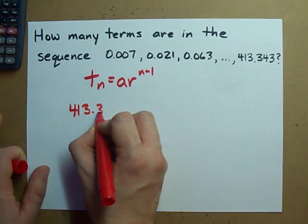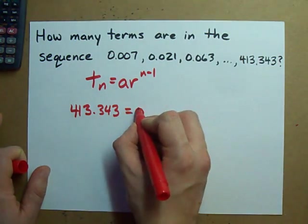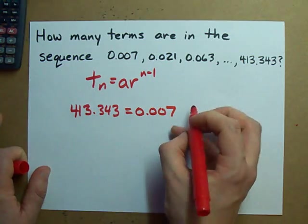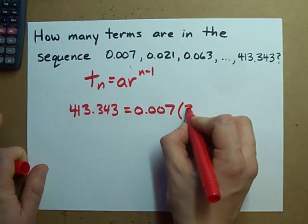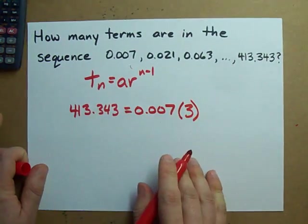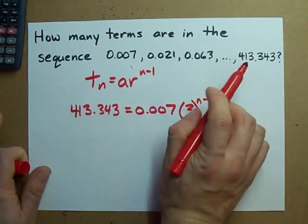413.343. Our first term, 0.007. We know our common ratio because we're tripling each time. It's 3. And what we don't know is the n. The n is what we're looking for.